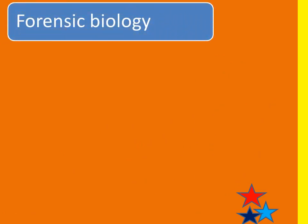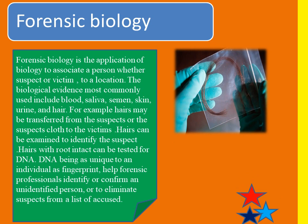Next is Forensic Biology, which applies biology to associate a suspect or a victim to a location. The most commonly used biological evidence includes blood, saliva, semen, skin, urine, and hair. For example, hair can easily be transferred from the suspect or the suspect's clothing to the victim during the crime. If hair is intact with the root cell, we can perform DNA analysis to identify the person who committed the crime. DNA, being as unique to an individual as a fingerprint, helps forensic professionals identify unidentified persons or eliminate suspects from a list of accused.